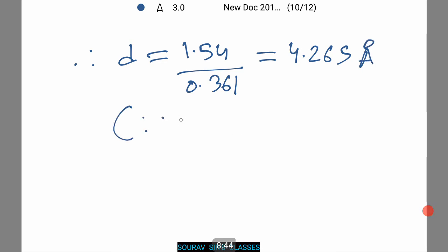Therefore d equals 1.54 by 0.361 which equals 4.265 angstrom. And you need to give the reasoning. Since d is equal to lambda by 2 sin theta, which you can prove using Bragg's law.